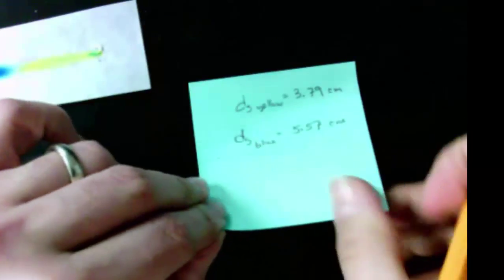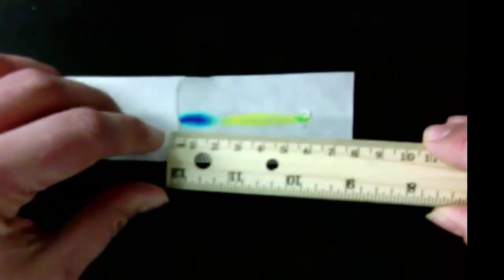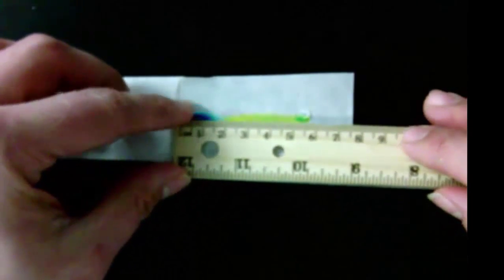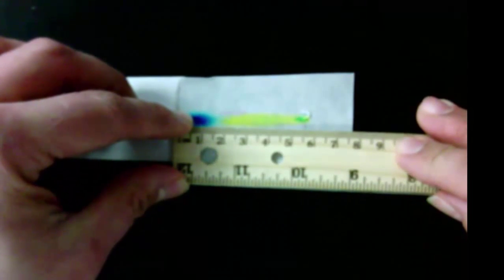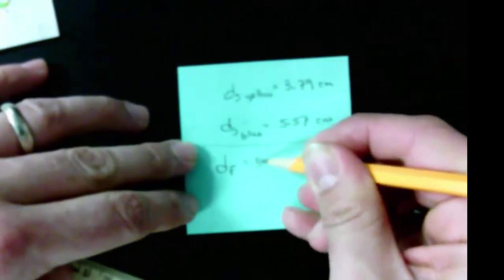Now, the third measurement that I have to make is the distance from the origin to where the solvent ended, the solvent front, and I'm going to call that df, f for front. So I'm going to measure from that line that I drew down to the origin circle, and I see that that's 5.61. That is my df, 5.61 centimeters.